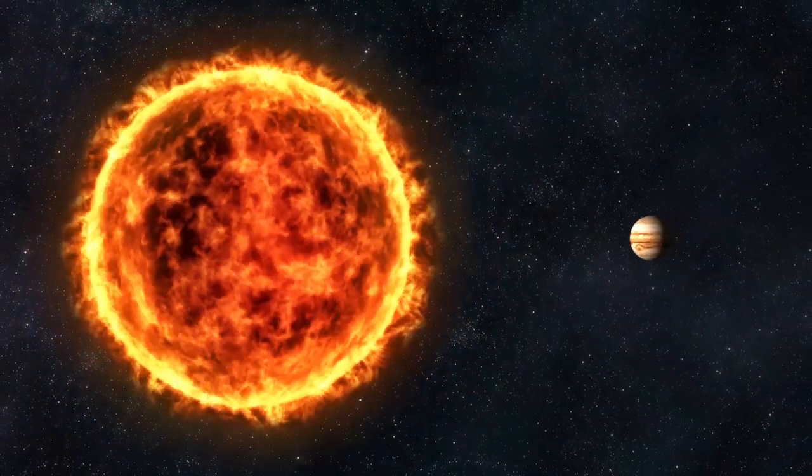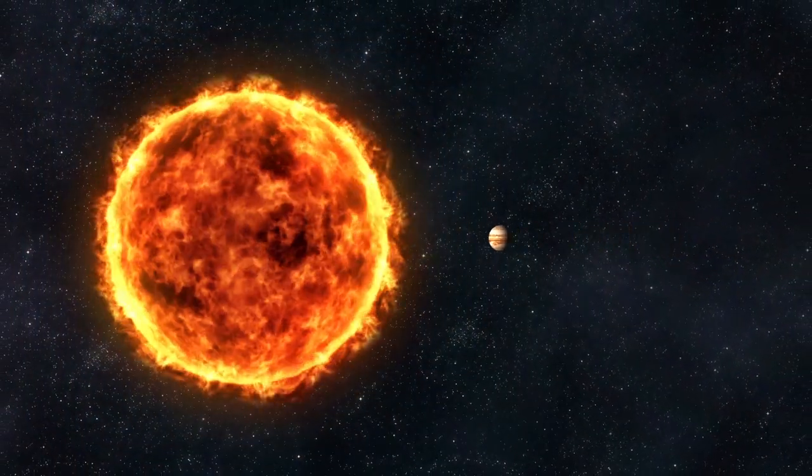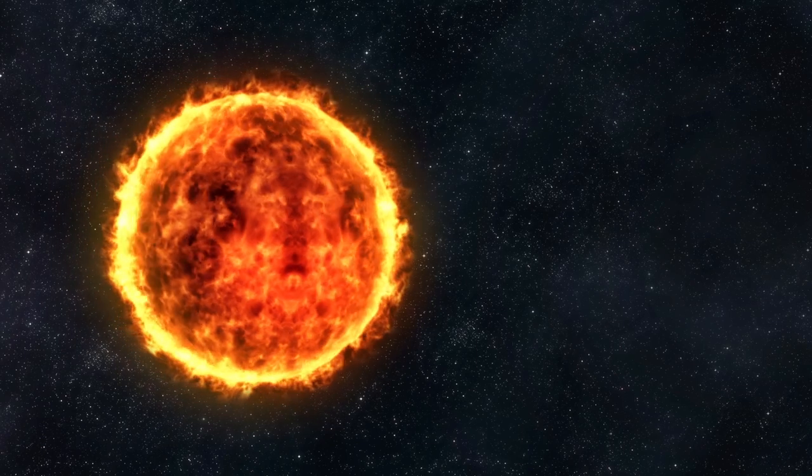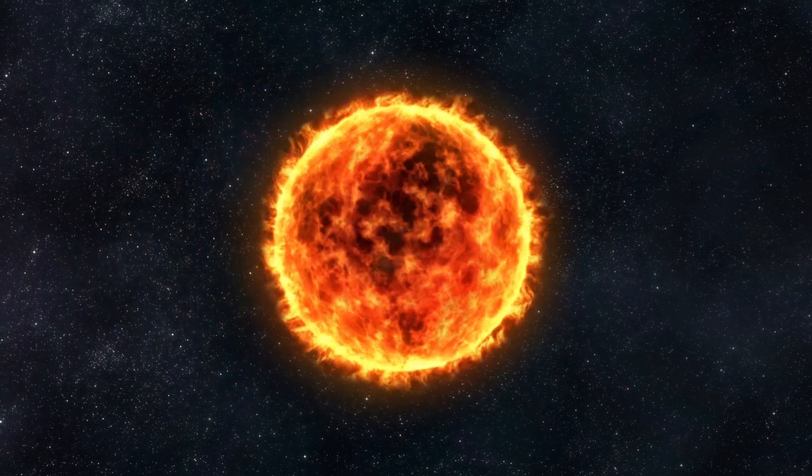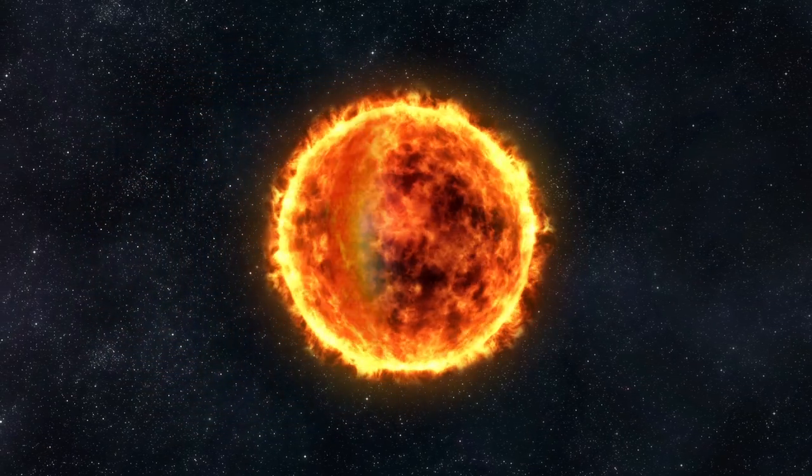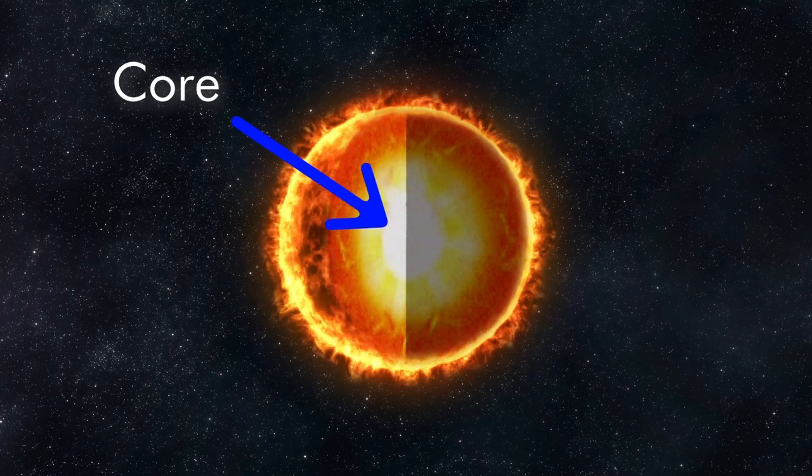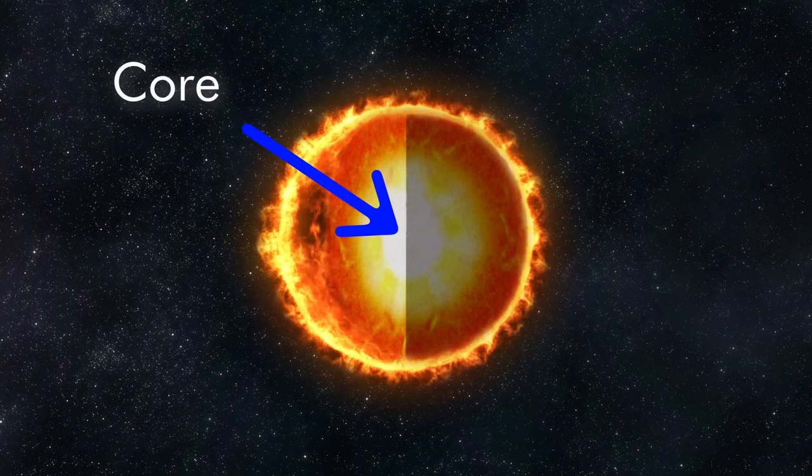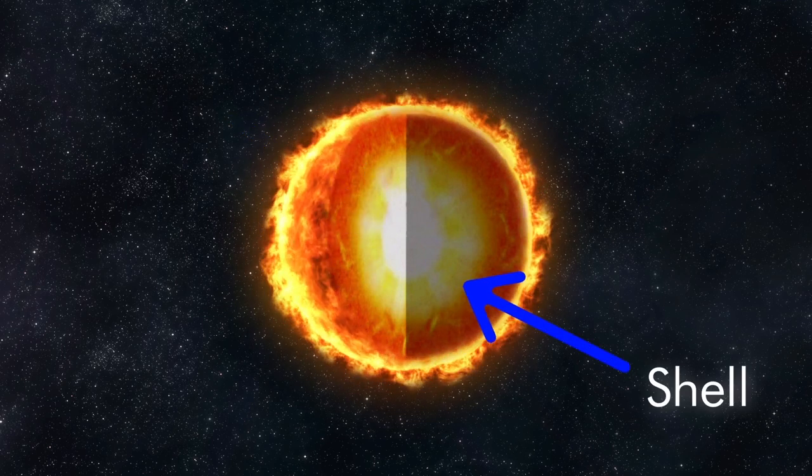Stars shine because of nuclear fusion. It takes a lot of energy to fuse two atoms together. This is why large bodies like stars fuse matter, while smaller objects like planets do not. Stars are so large that gravity squeezes their matter together tightly enough for fusion to occur. This fusion mostly occurs in the core of the star, but at times it can also take place in layers surrounding the core, called shells.